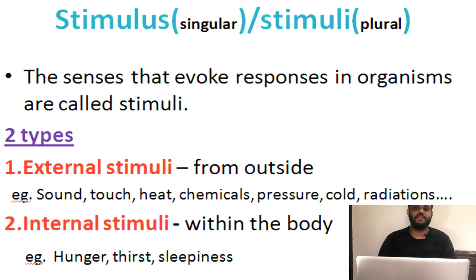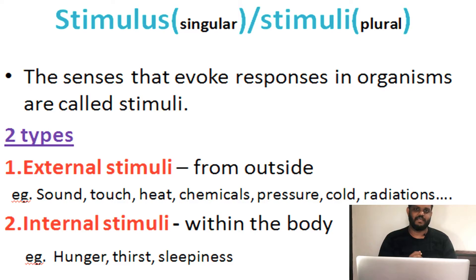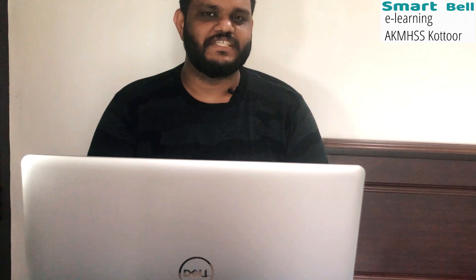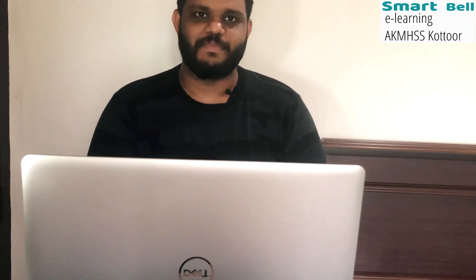Then what is internal stimulus? Like hunger and thirst — all these are known as the internal stimulus because they come from the inside of the body. That is the difference between external and internal stimulus. All these stimuli are received by a special type of cells which are present in the sense organs, and these specialized cells are known as the receptors.